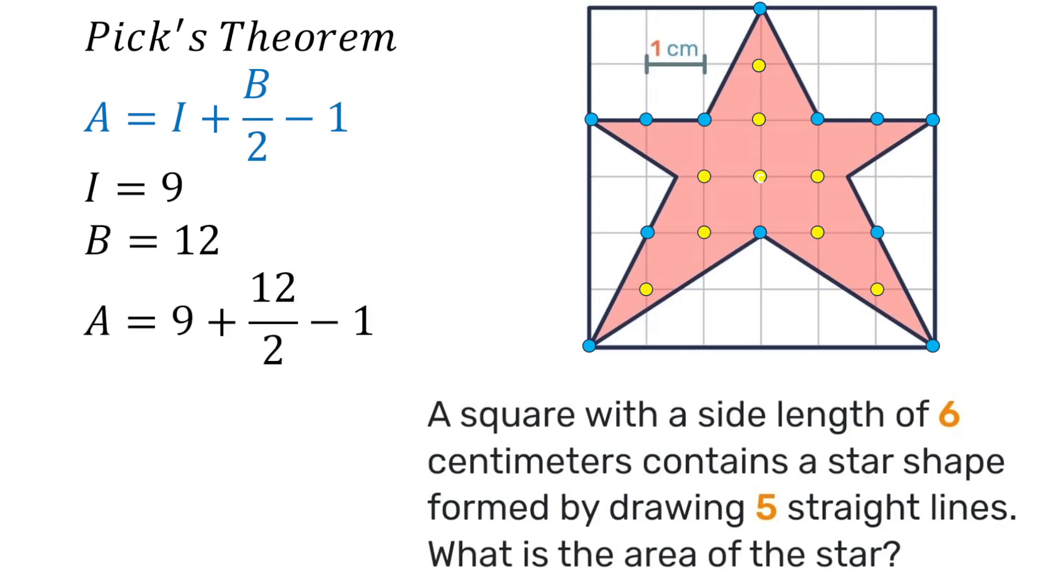Substituting into our formula we'll have A is equal to 9 plus 12 over 2 minus 1. 12 divided by 2 is 6. 9 plus 6 is 15. 15 minus 1 is 14. Did you get that answer?